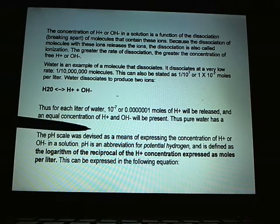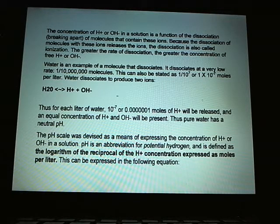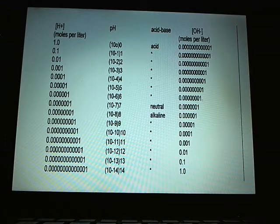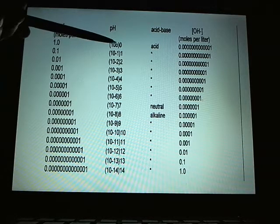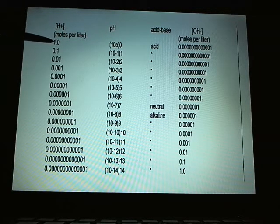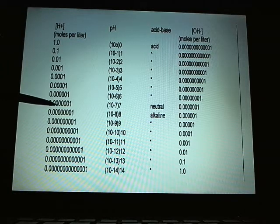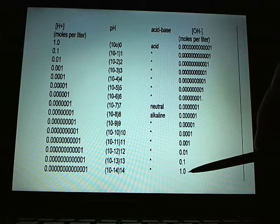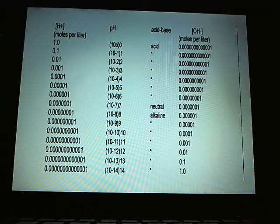The pH scale expresses the concentration of hydrogen in a solution. pH is an abbreviation for potential hydrogen — it is the negative log of the hydrogen ion concentration. At pH 0, you have 1 mole per liter of hydrogen and very little hydroxyl. At pH 7, it's neutral with equal amounts of hydrogen and hydroxyl. Above 7, it's alkaline because there is more hydroxyl than hydrogen. At pH 14, you have 1 mole per liter of hydroxyl — very, very basic.